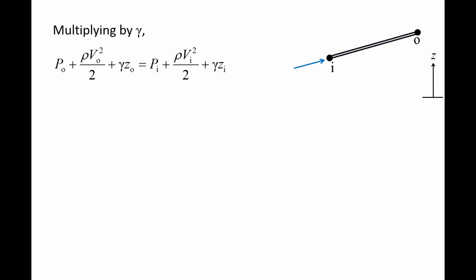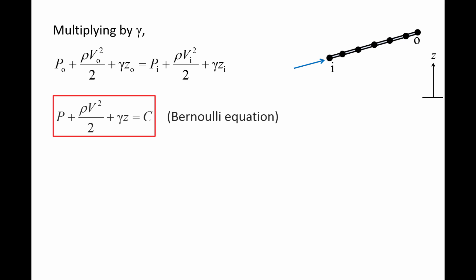We can multiply the equation by the specific weight gamma to give us an equation where each term has units of pressure. The sum of p plus rho v squared over 2 plus gamma z at the end of the streamline is equal to the sum of these three terms at the beginning of the streamline. In fact, the sum of those three terms at any point along the entire streamline is constant — we denote this constant by the letter c, and we have arrived at the Bernoulli equation.